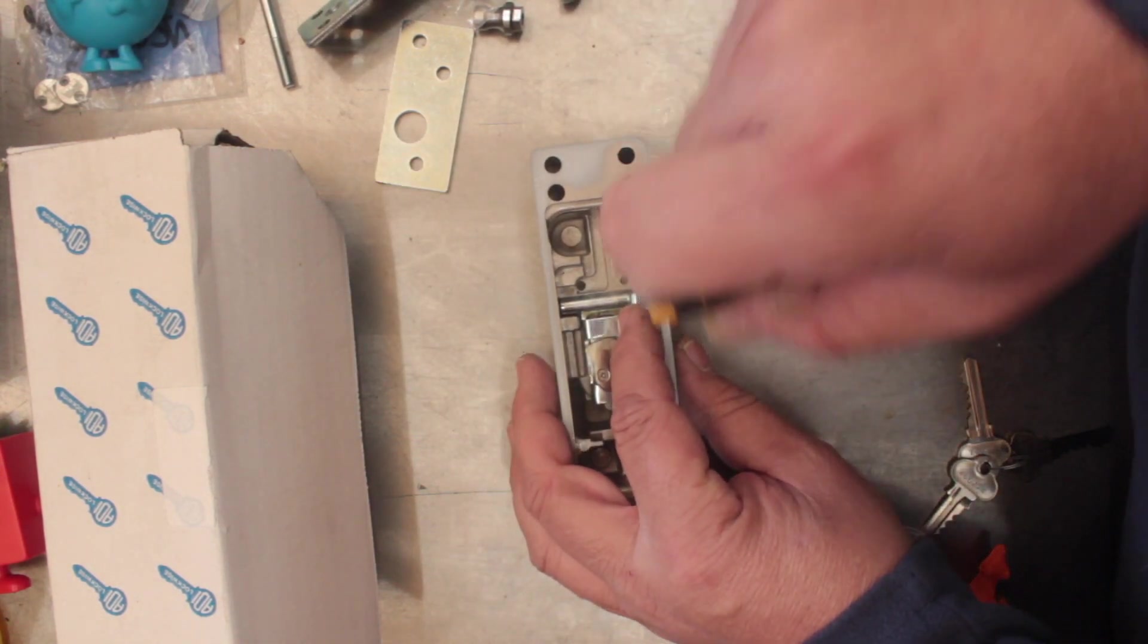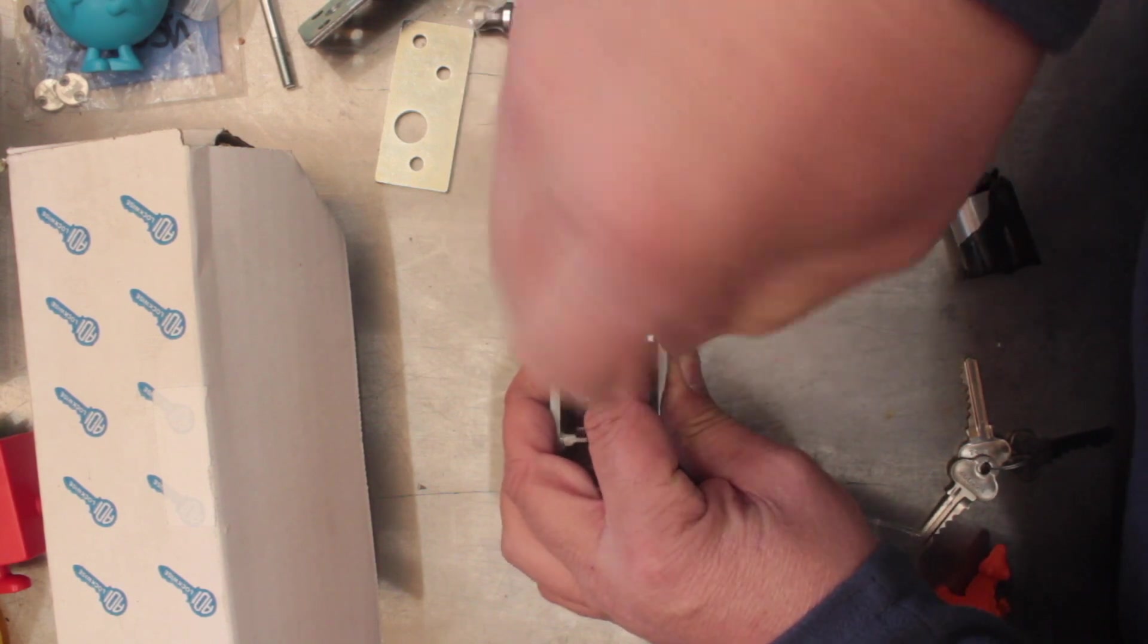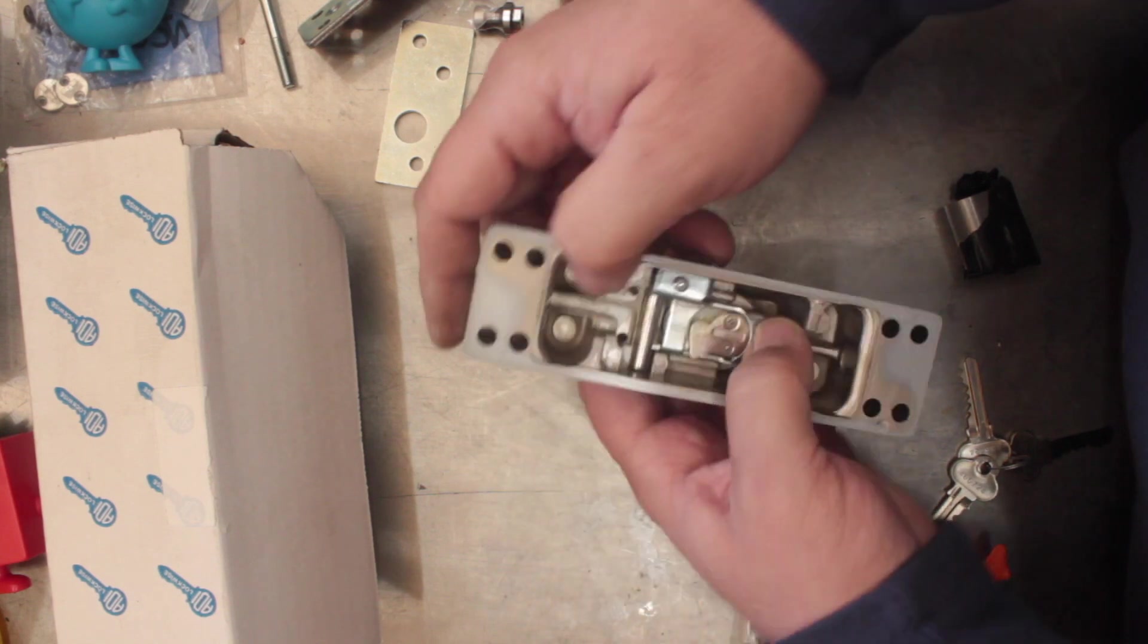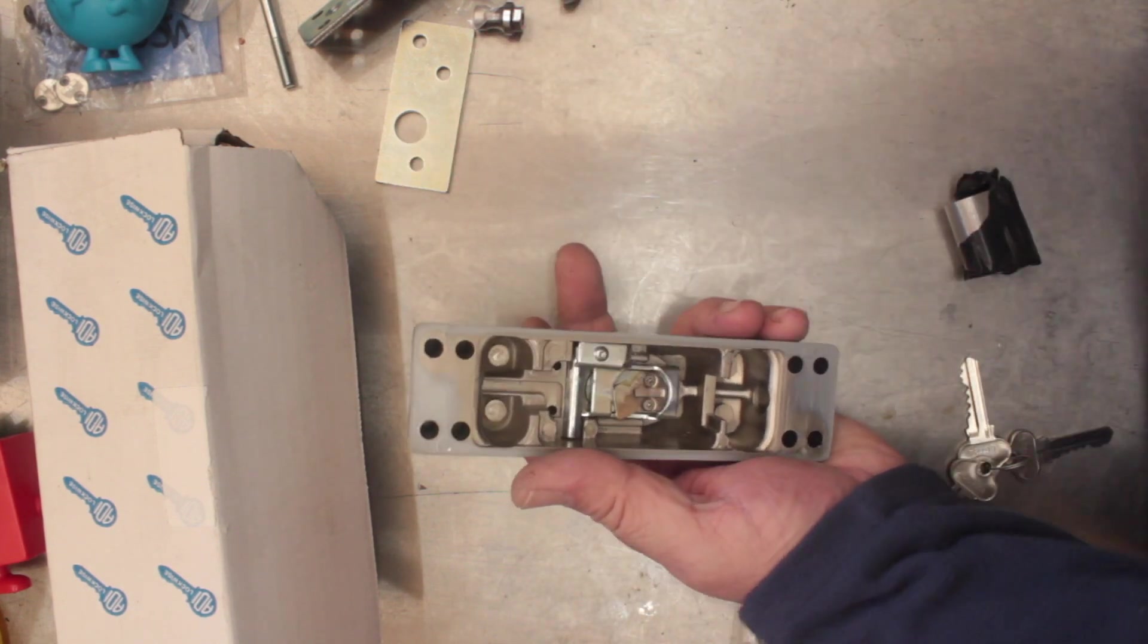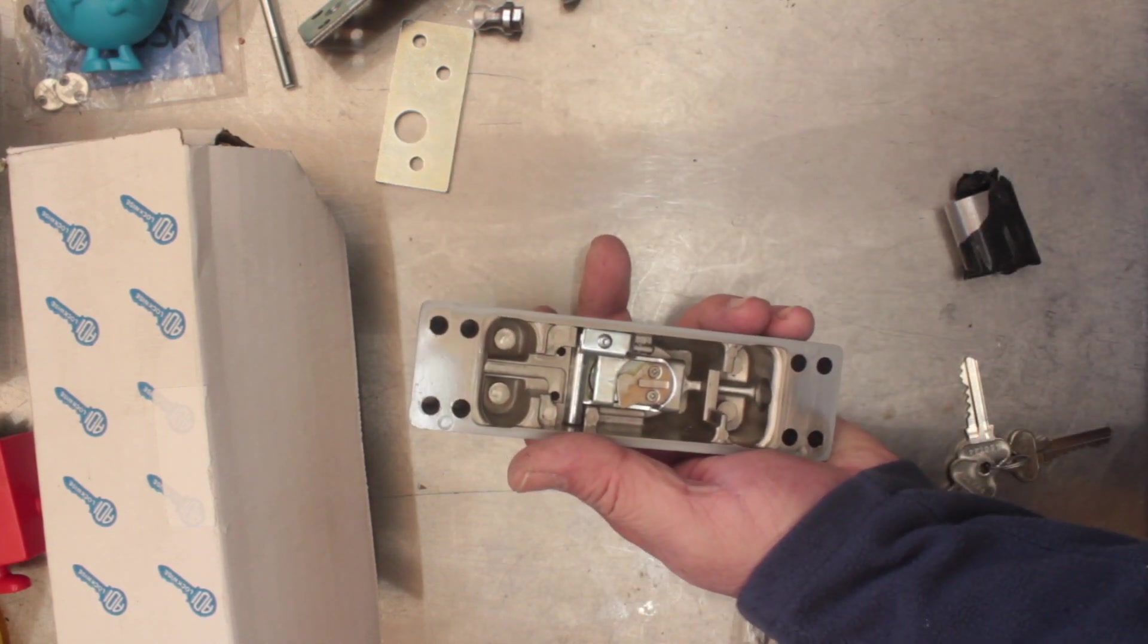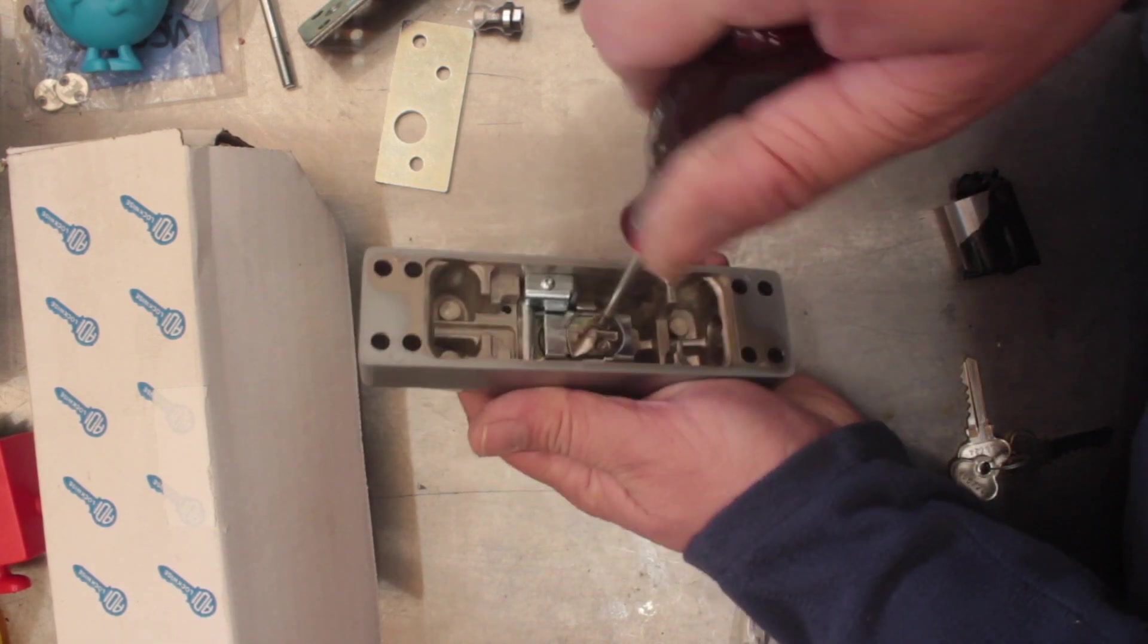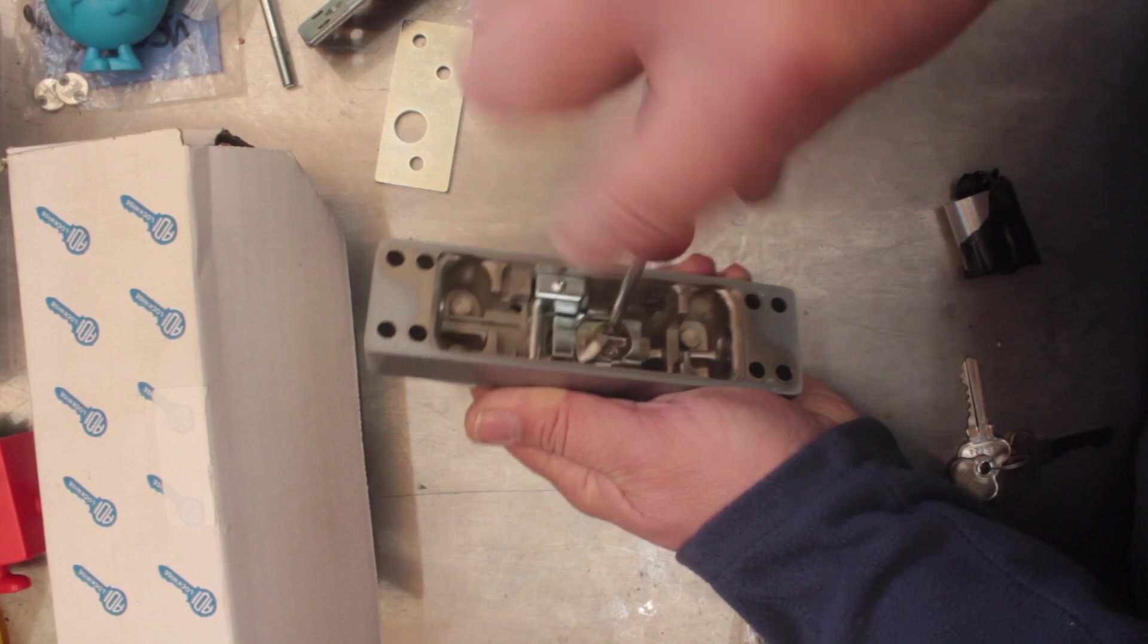Once you get your lock like this, we need to actually change the cylinder. So what we're going to do is I'm just going to remove this—wrong allen key. All right, let's do it the cheating method. I just need a Phillips head screwdriver.